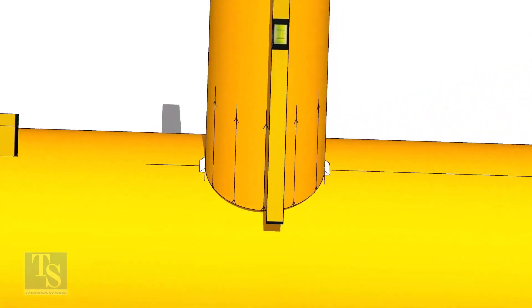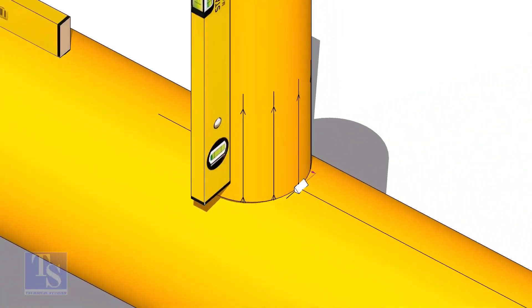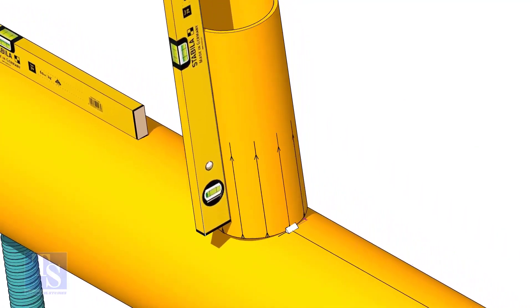Now, make sure the pipe header and the branch are horizontally and vertically level. If required, strengthen the tack weld.